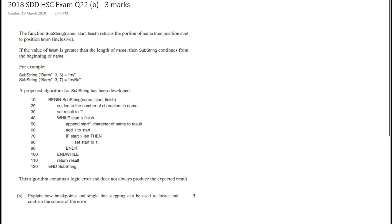Let's have a quick look at the algorithm. We have function `substring` which has three parameters: name, start, and finish. It returns the portion of name from position start to position finish inclusive. For example, `substring(barry, 3, 5)` — passing barry for name, 3 for start, and 5 for finish — will return 'rry', characters 3 to 5 in the word barry.